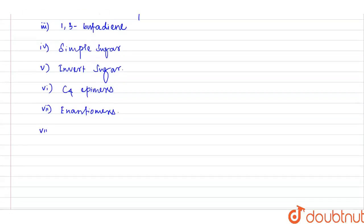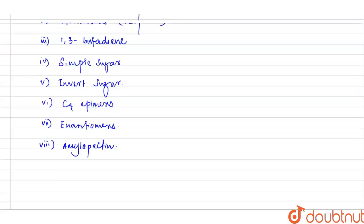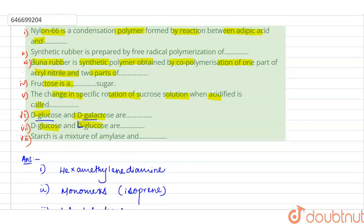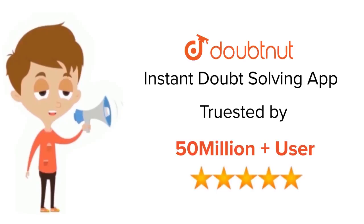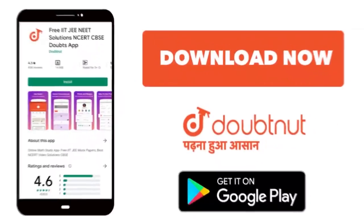The correct answer will be amylopectin. Okay, hope you understood. For class 6-12, IIT-JEE and NEET level, trusted by more than 5 crore students. Download Doubtnet app today.